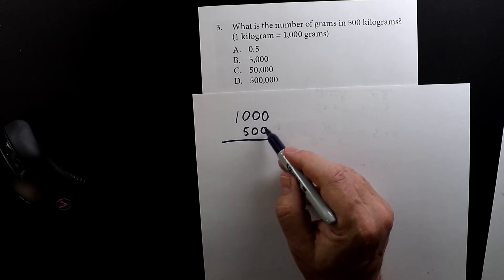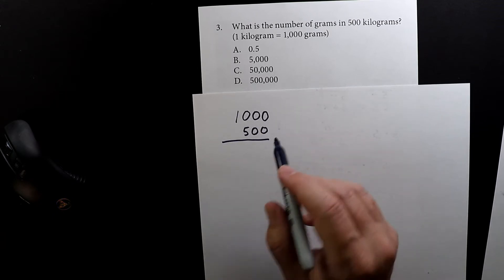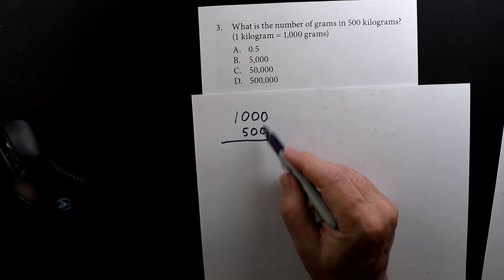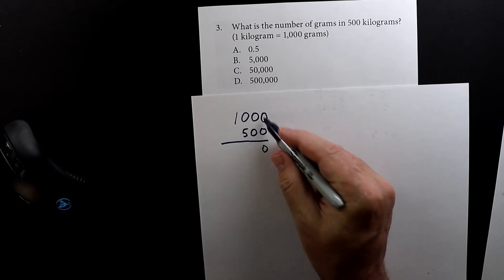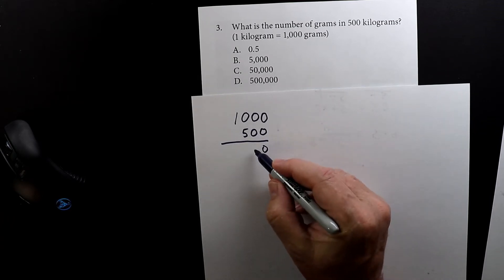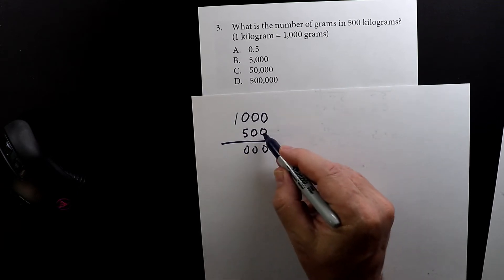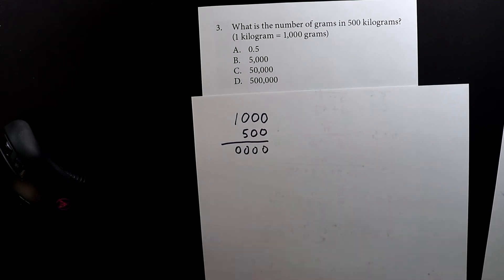So now we're going to do a lot of multiplication by zero—actually we're going to do it five times. Zero times zero is zero, zero times zero is zero, zero times zero is zero, zero times one is still zero.